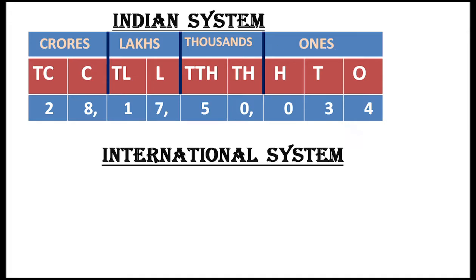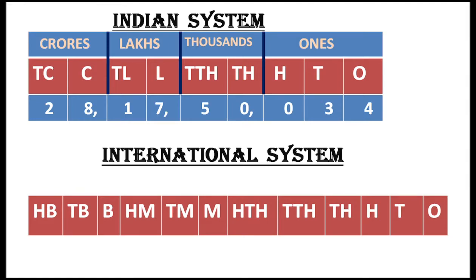Next, I am explaining the international system. After explaining this system, let's compare these two. In the international system, the place values are: ones, tens, hundreds, thousands, ten thousands, hundred thousands, million, ten million, hundred million, billion, ten billion, and hundred billion.